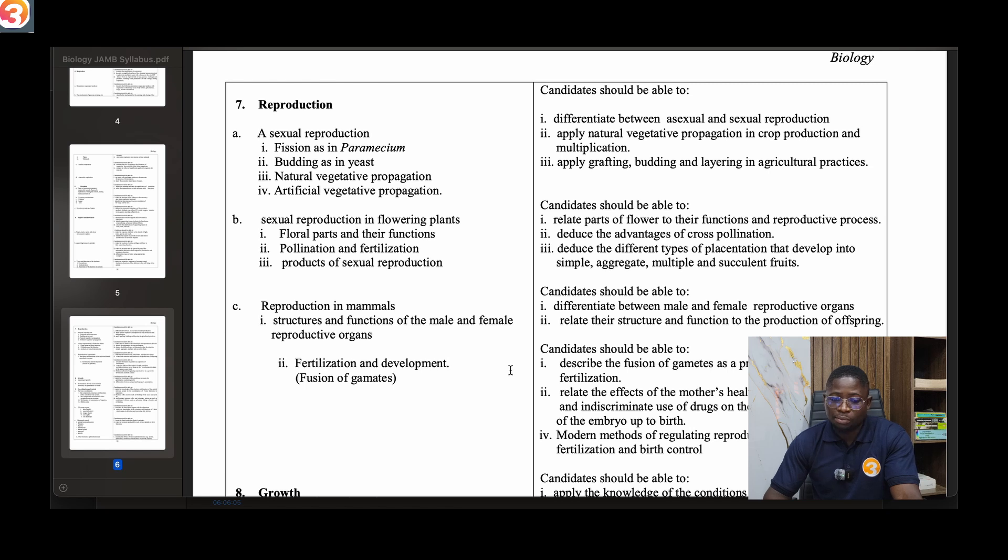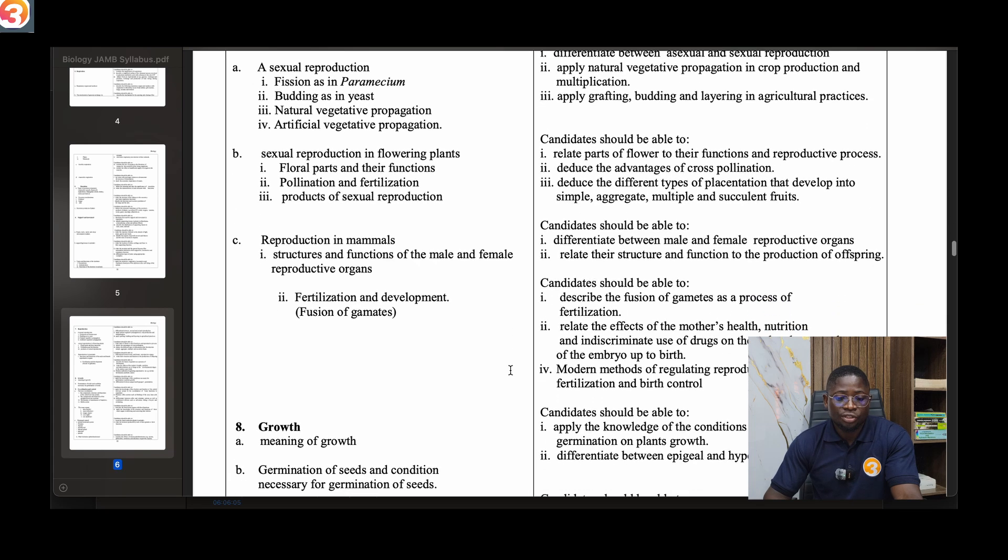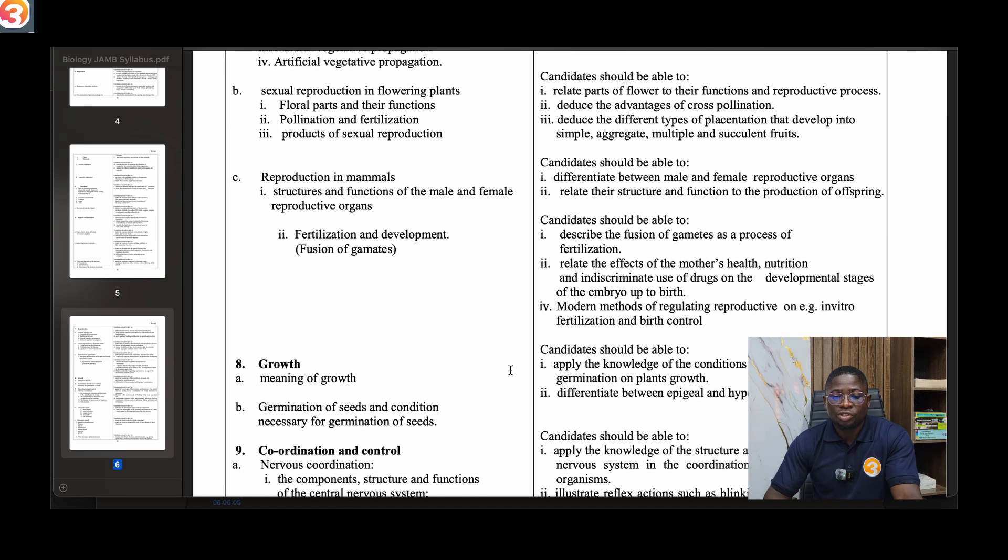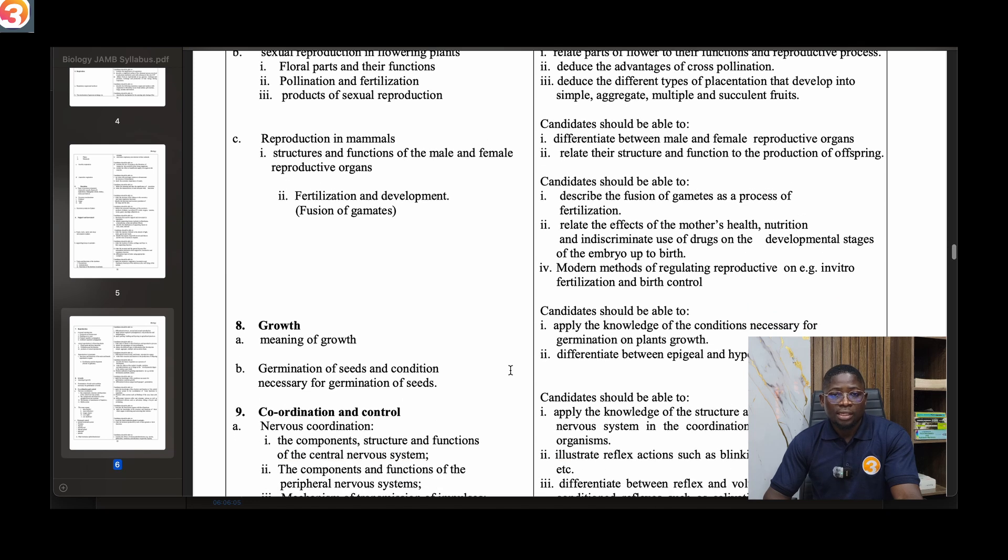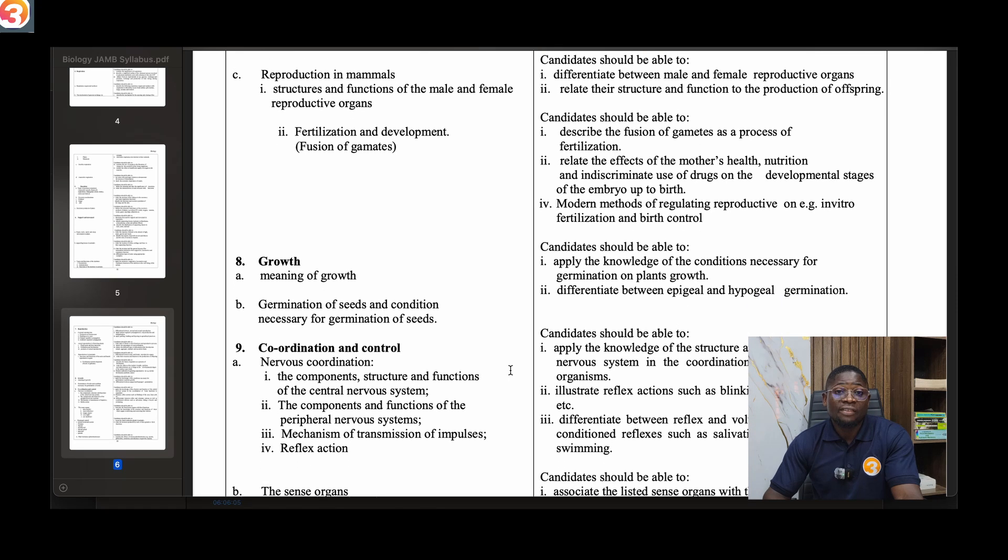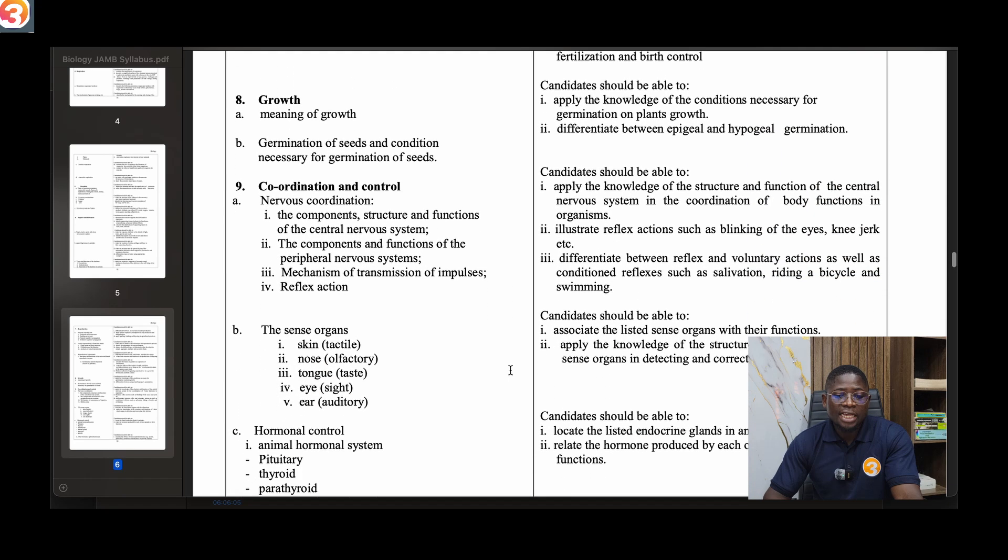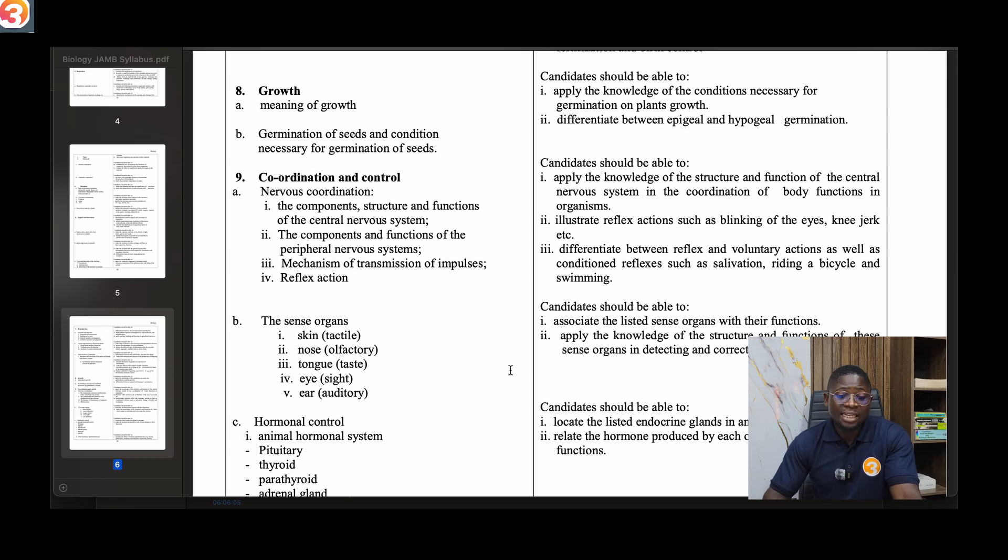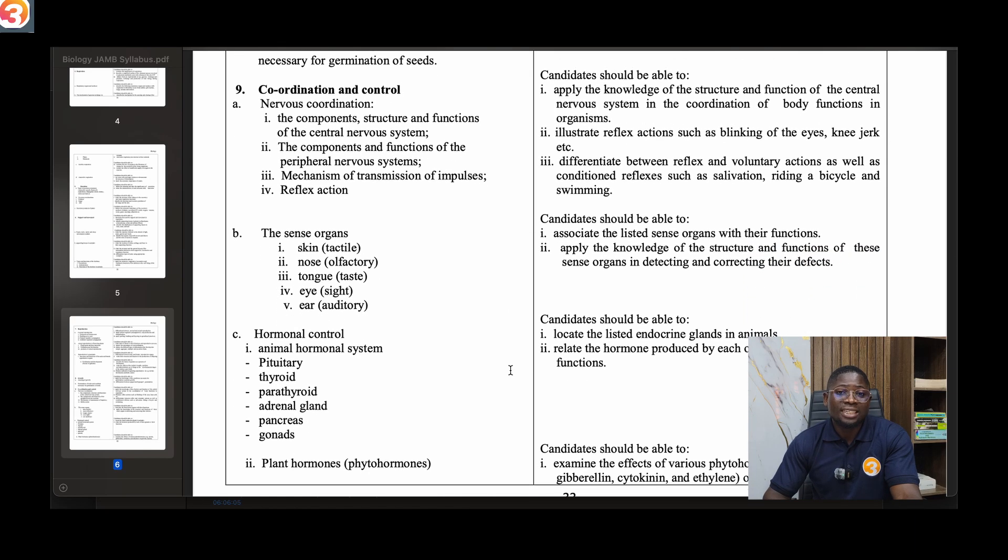Talk about asexual reproduction - fission, budding as in yeast, and natural vegetative propagation, artificial vegetative propagation. Then B, talk about sexual reproduction in flowering plants, floral parts and their functions, pollination and fertilization, products of sexual reproduction. Then C, reproduction in mammals, structures and functions of the male and female reproductive organs, fertilization and development. Then growth - the meaning of growth, germination of seeds and conditions for germination of seed. Then talk about coordination and control, nervous coordination, the sense organs, hormonal control, and taxes.